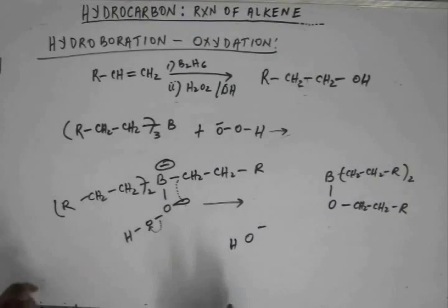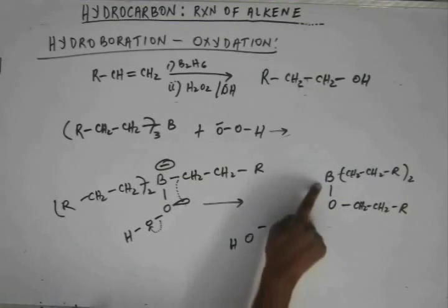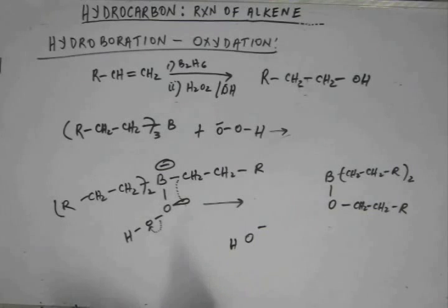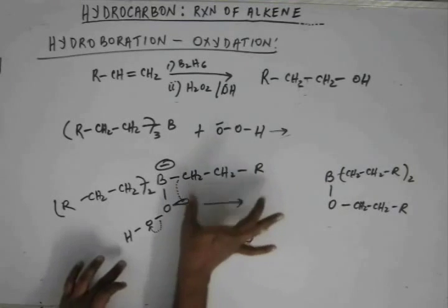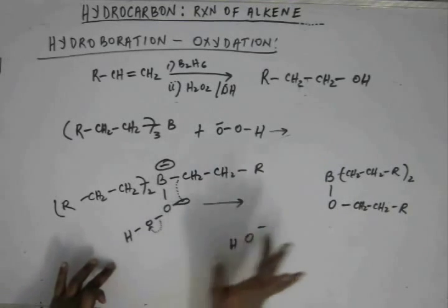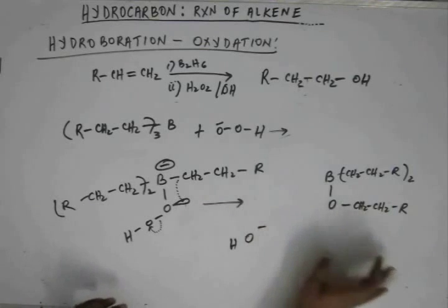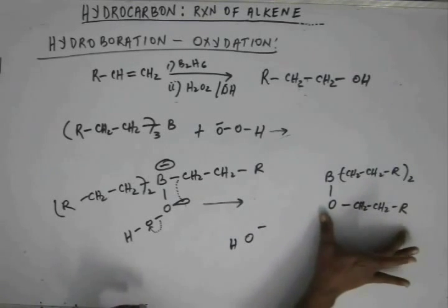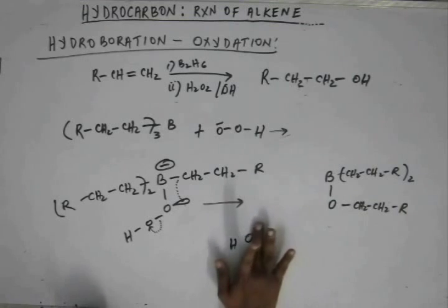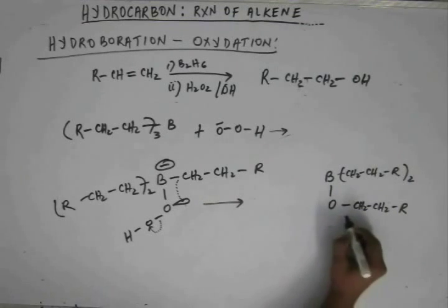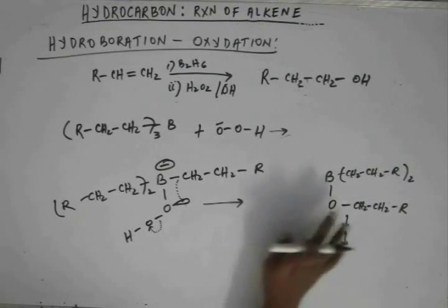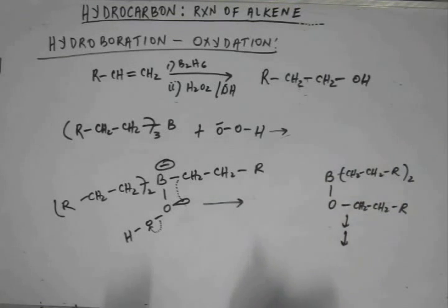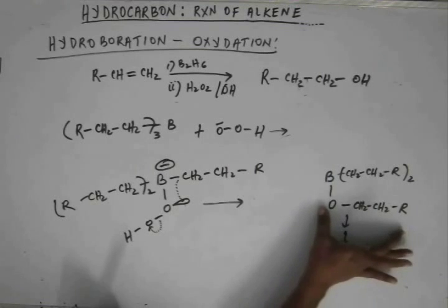If we repeat the exactly same thing two more times. Again boron has an empty orbital. Again another hydrogen peroxide ion can come and put its electron into boron. This kind of migration as we have shown once, that will again happen. There will be again another alkoxide part attached with boron. And when this step repeats three times, third time, two more times, both the rest of the two alkyl groups will turn into alkoxy groups like this.